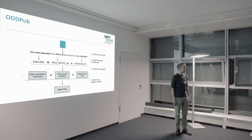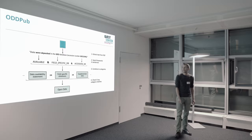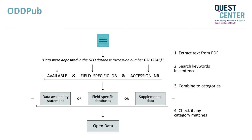The second tool is OPPUB — open data detection in publications. This is a text mining tool that looks for data sharing statements in publications.